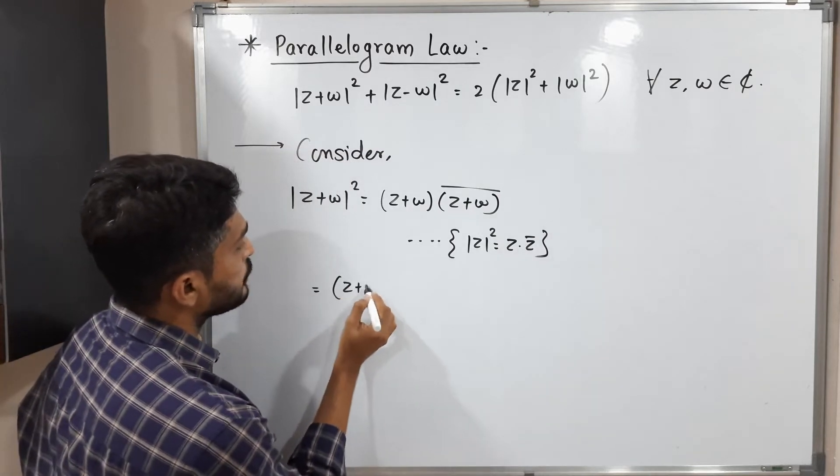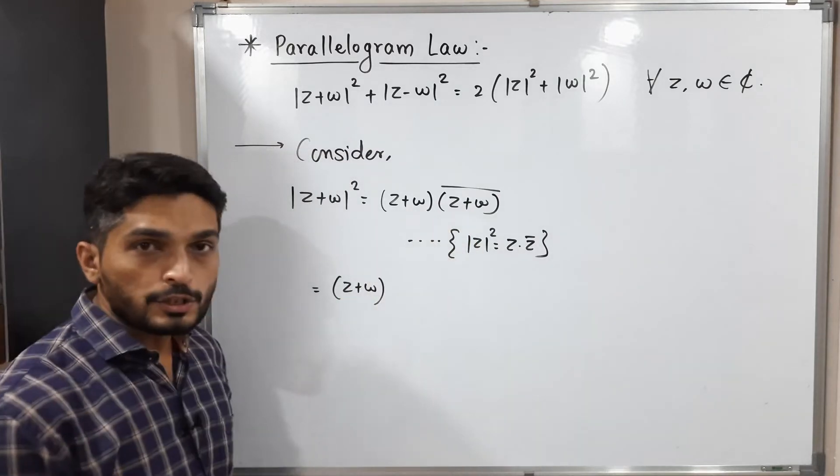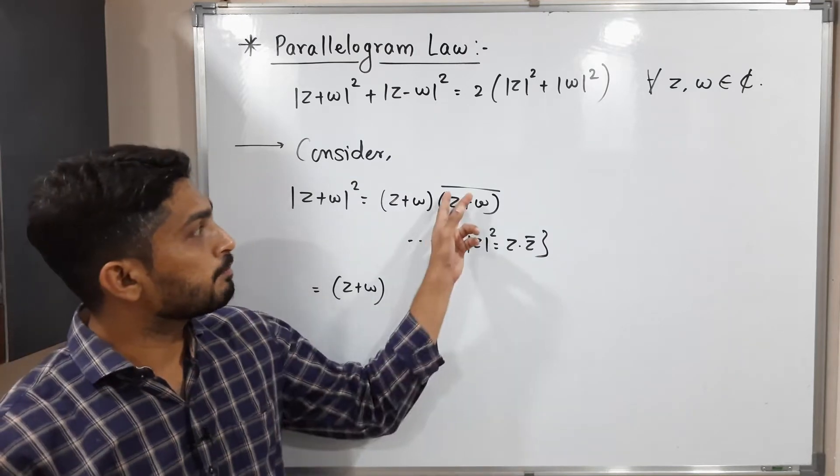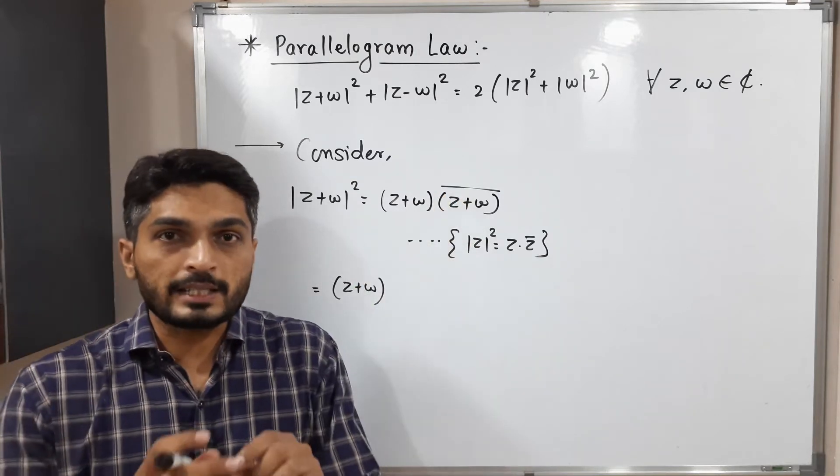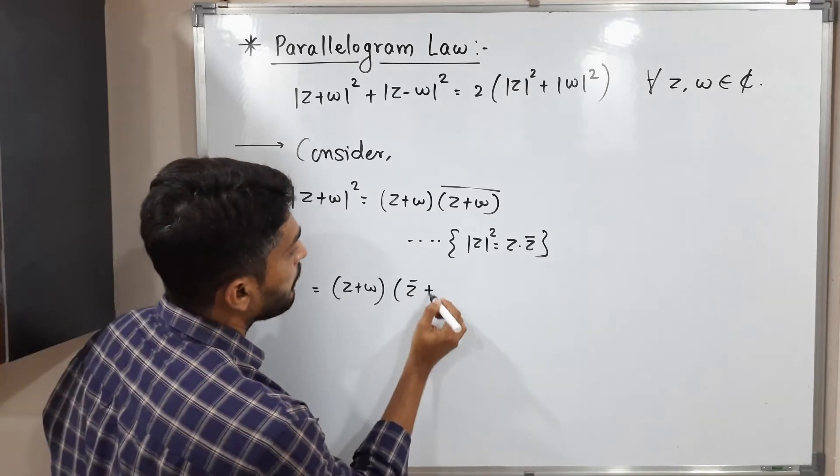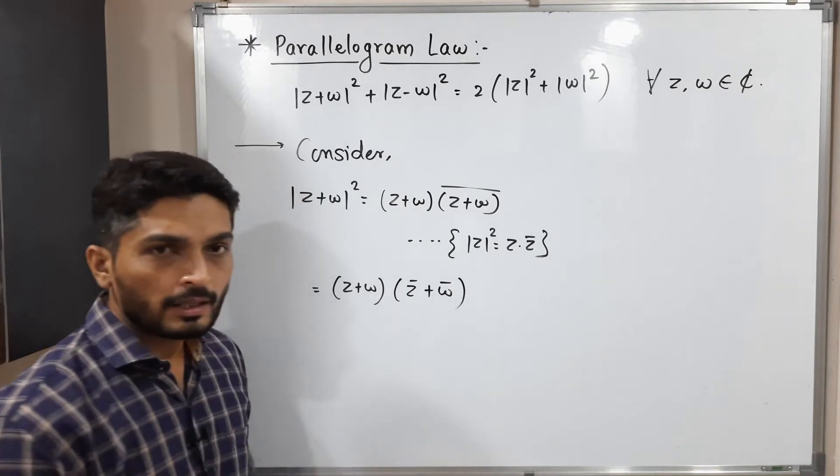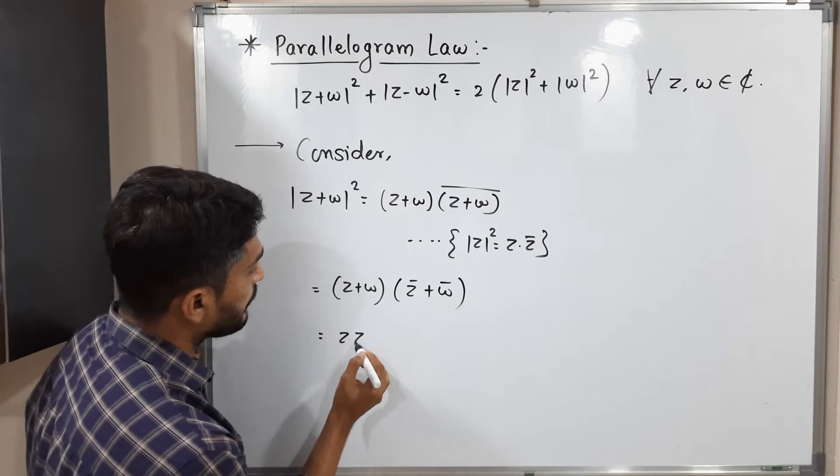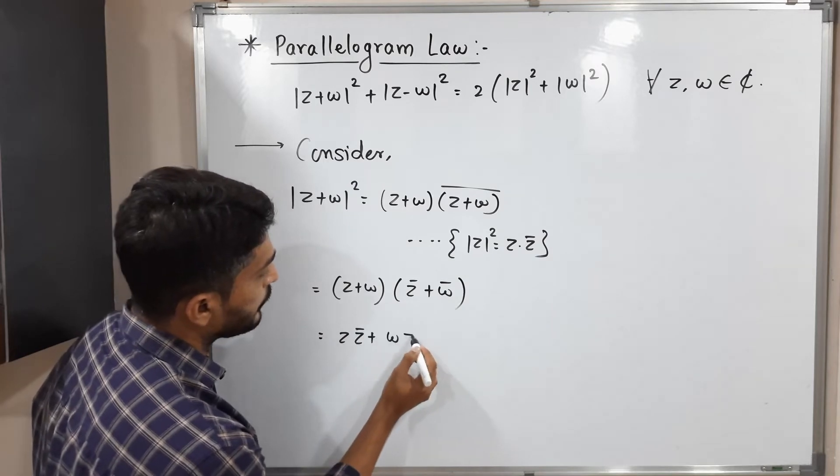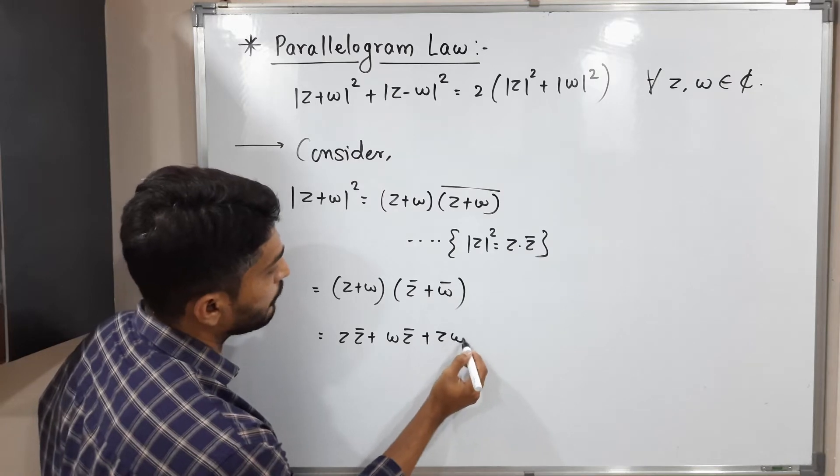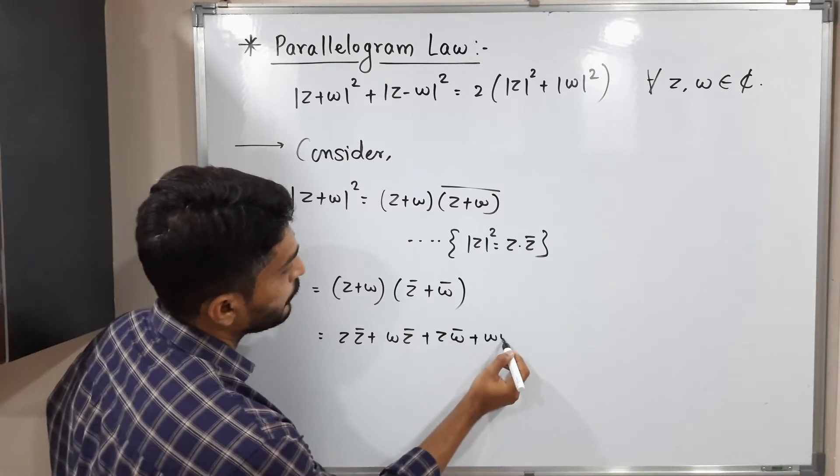So let me mention the result. That result is mod z square is equal to z into z bar. So this is equal to z plus w. If addition, subtraction, division or multiplication there, and if there is bar, that means complex conjugate, we take separate separate bar. I am going to do the same. So that is why z bar plus w bar. Let us take product and let us find a value. So z into z bar we can write plus w into z bar plus w, z into w bar plus w into w bar.